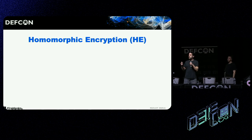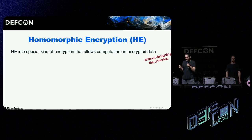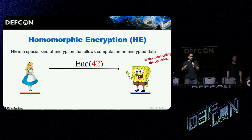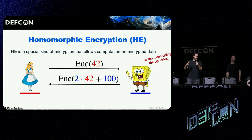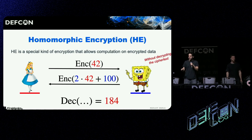The second background item is homomorphic encryption. It is a special kind of encryption that allows computation on encrypted data without decrypting the ciphertext. For example, Alice sends an encryption of the number 42 to Bob — red for values Alice knows, blue for values only Bob knows. Bob can operate on it, for example multiplying by 2 and adding 100, obliviously, without knowing what's inside. Alice, after receiving the resulting ciphertext, can decrypt it and learn the result without ever knowing exactly what Bob did to the ciphertext.